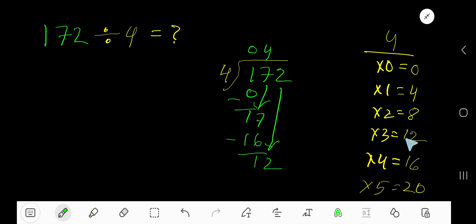Now we have 12. 4 goes into 12 how many times? 3 times. 3 times 4 is 12. Subtract to get 0. As our remainder is 0, we are done. Our answer is 43.